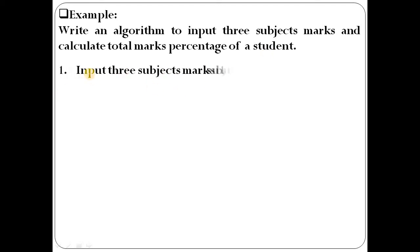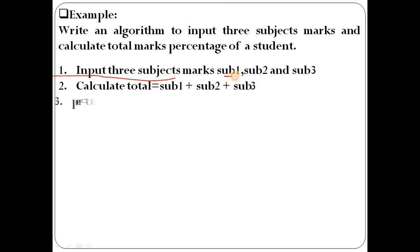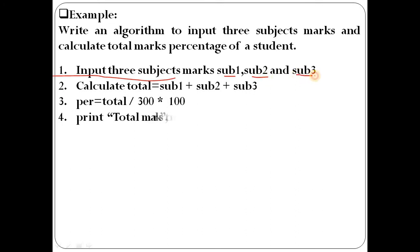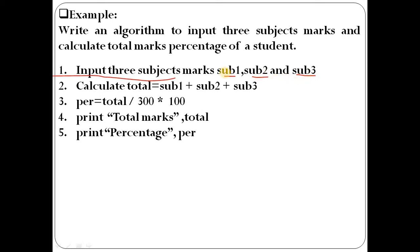What will be the steps? First, input three subjects — subject1, subject2, and subject3. We can also write them as variables sub1, sub2, and sub3. After inputting the values of the variables, we add the three subjects: sub1 plus sub2 plus sub3.